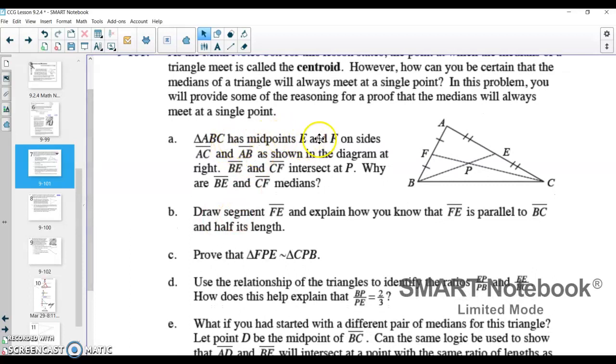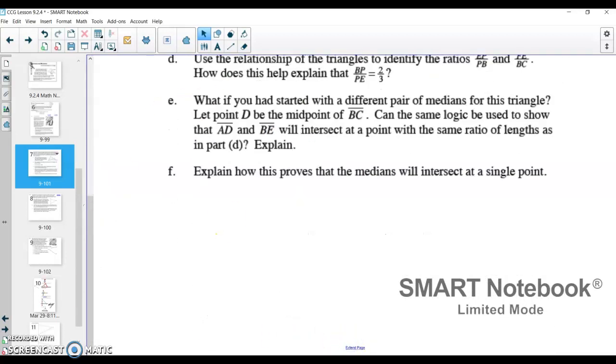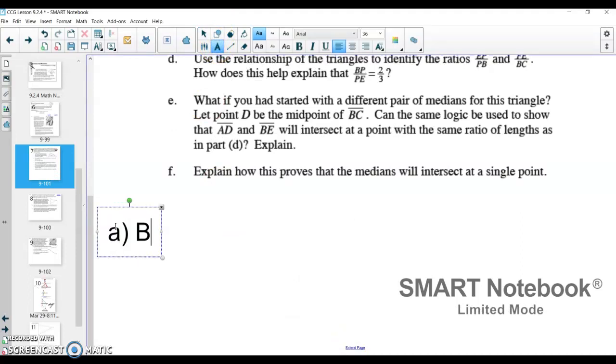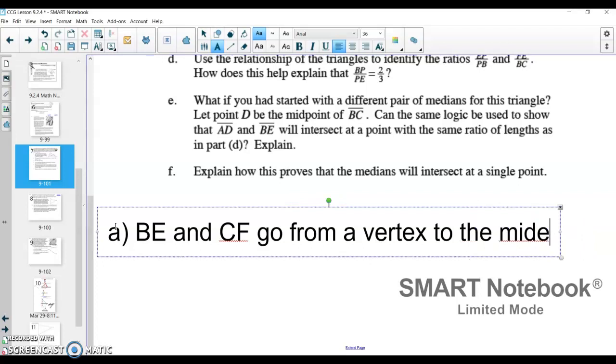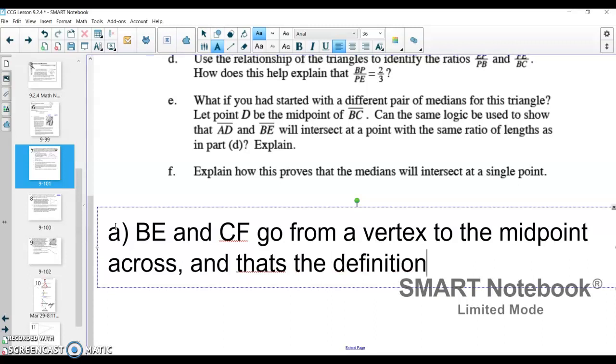So in part A, it says that triangle ABC has midpoints E and F on sides AC and AB. And so F is the midpoint of AB, and E is the midpoint of AC. BE and CF intersect at point P. And how do we know that BE and CF are medians? Well, a median is a line that goes from a vertex to a midpoint, and that's what's happening with BE and CF. And so if I were to put an answer for A, that's what I would write. I would say that BE and CF go from a vertex to the midpoint across, and that's the definition of a median.